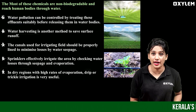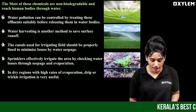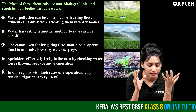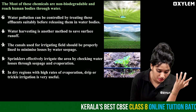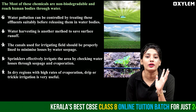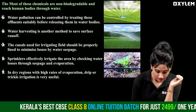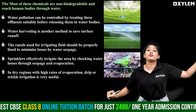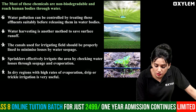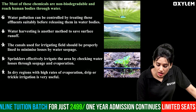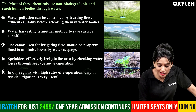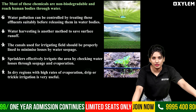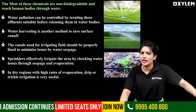In dry regions, we need to address water availability. In dry regions, maybe there is a hot climate with high rates of evaporation. Drip or trickle irrigation is very useful in such areas.